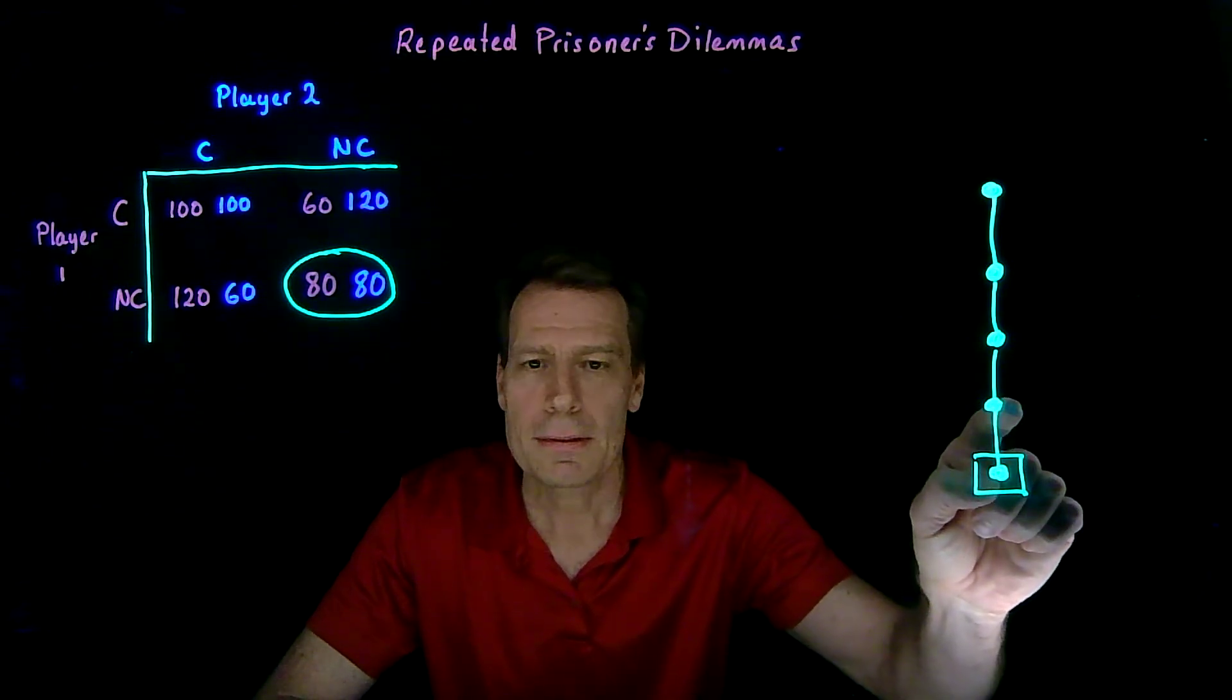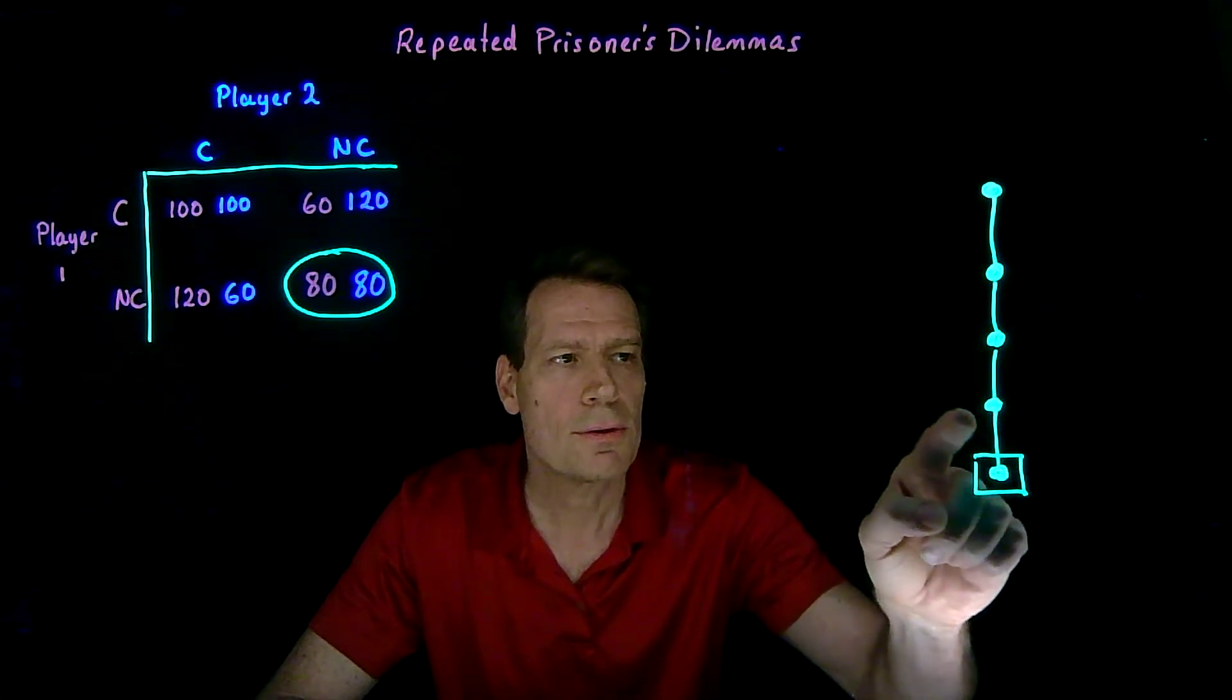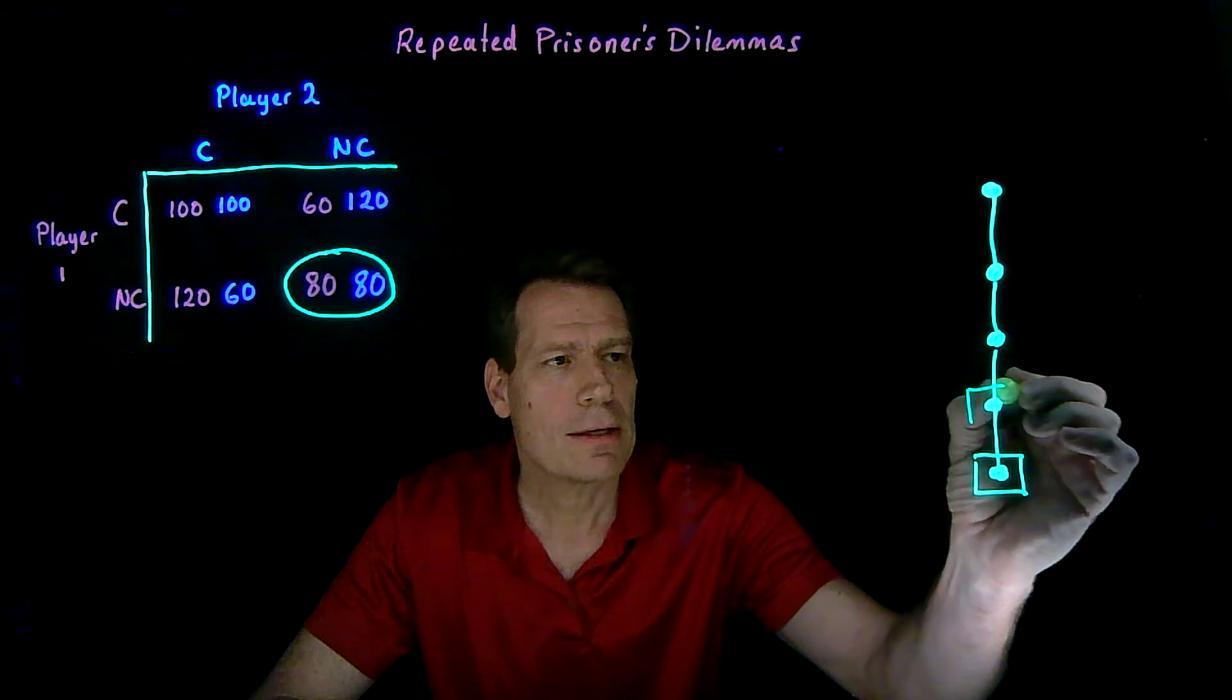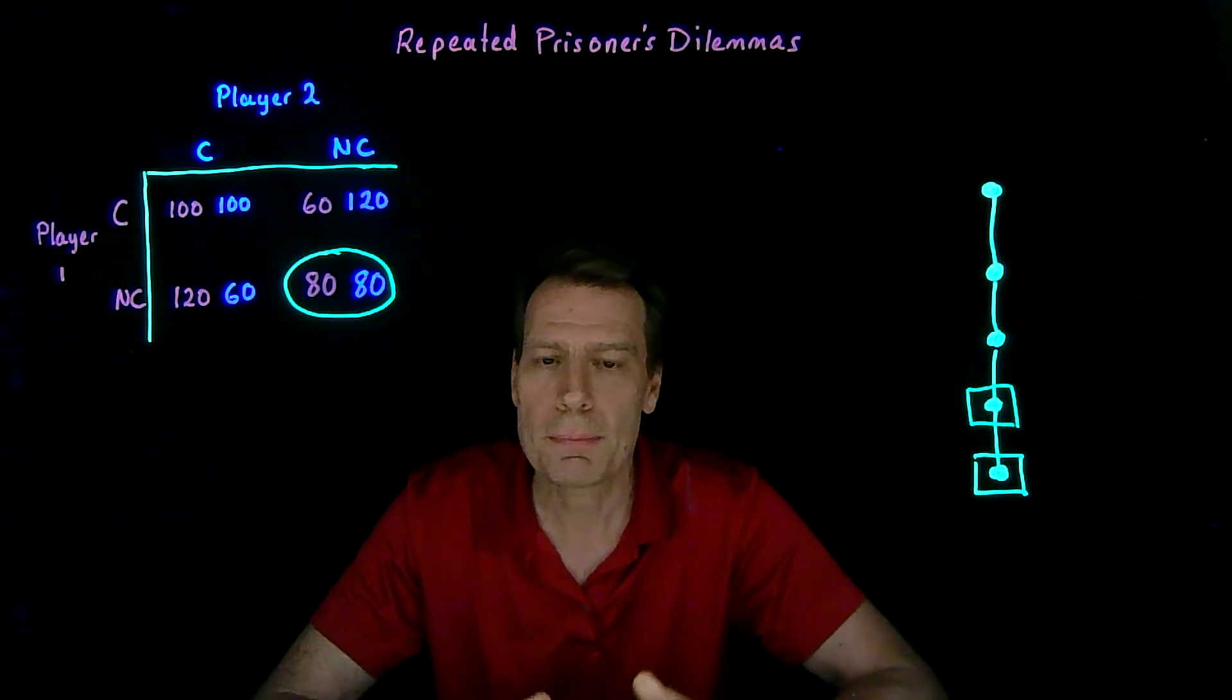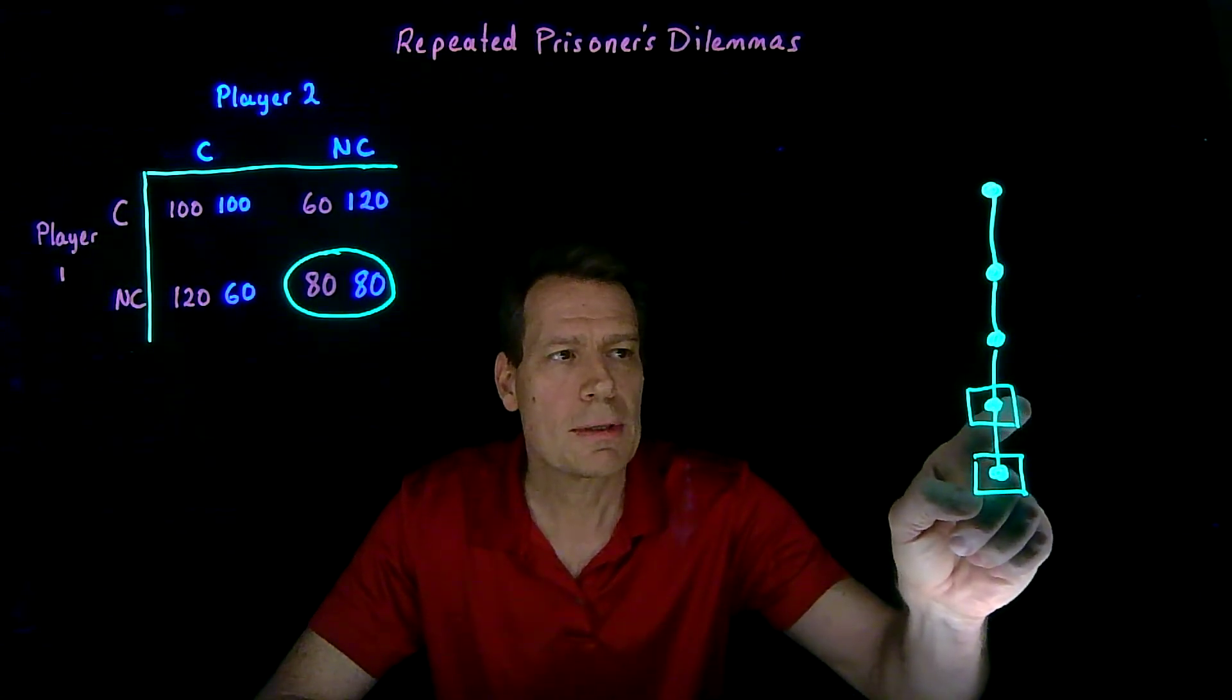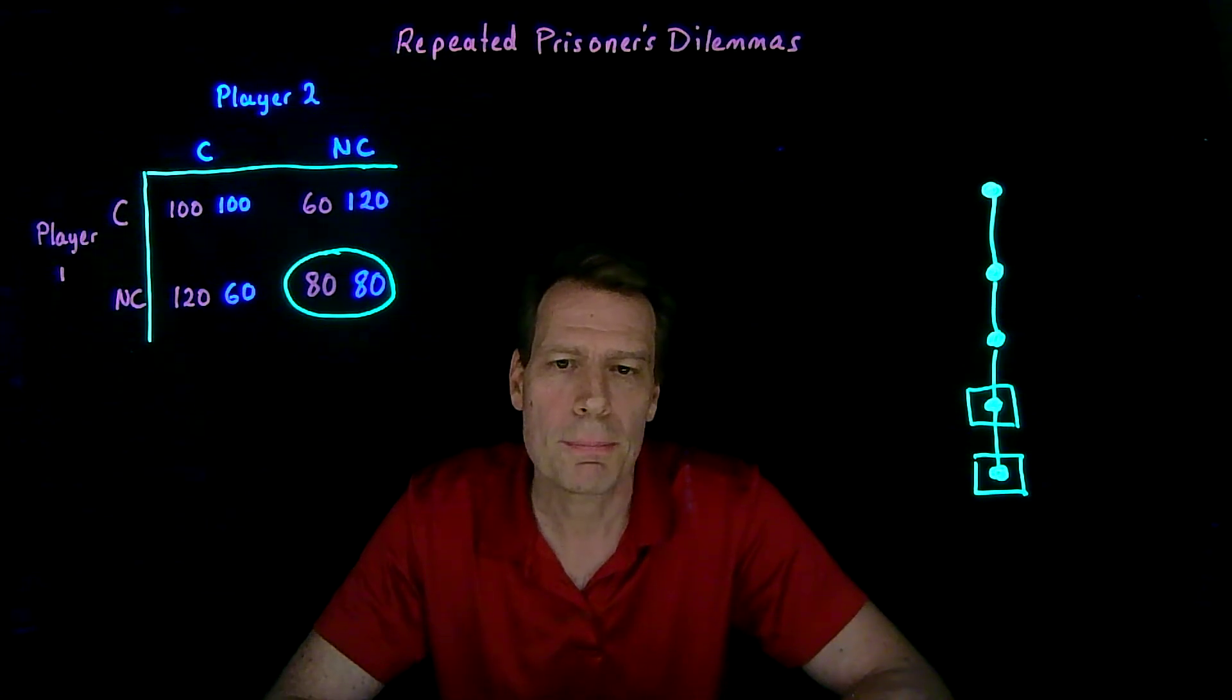They know at the second-to-final stage that they won't cooperate in the last stage, so there's nothing they can do in this stage to induce cooperation later on. So that means in the second-to-last stage, they're facing exactly the same incentives as they would if they only played the game once. There's nothing they can do to affect the outcome in the final stage, so they're simply playing the game as if it was the final game. And so again, they have a dominant strategy to not cooperate.